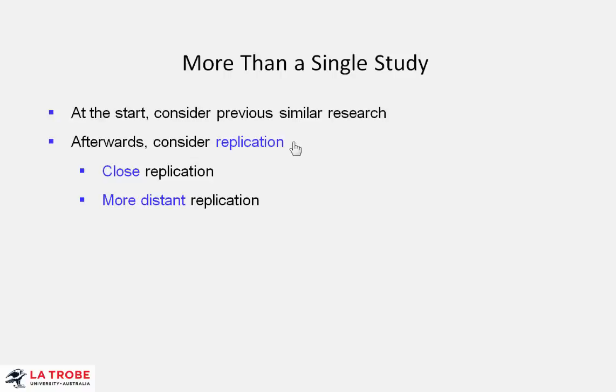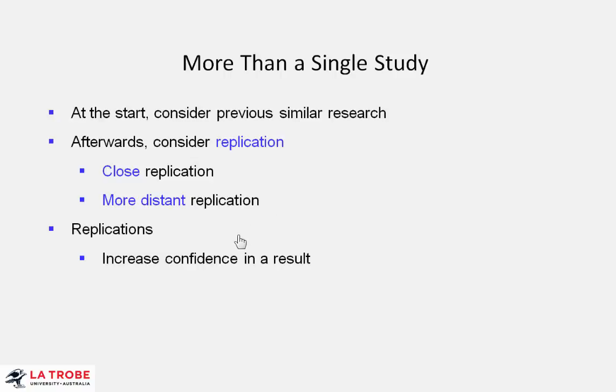Perhaps we will repeat the experiment, run a replication, or maybe other people will. This replication experiment might be close — meaning as similar as possible to the original — just with a different sample, or we might deliberately vary it a little: ask the question in slightly different ways, or perhaps use a slightly different population. And if we get similar results, that increases our confidence in the finding.